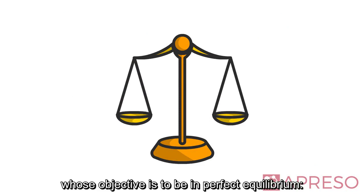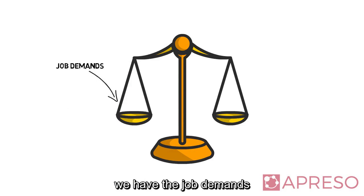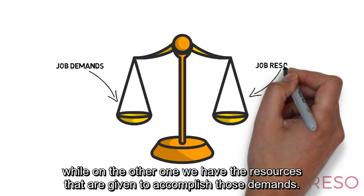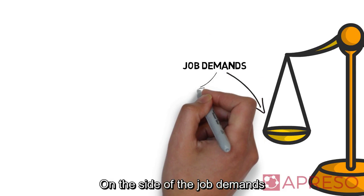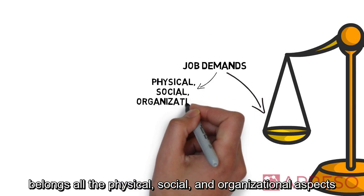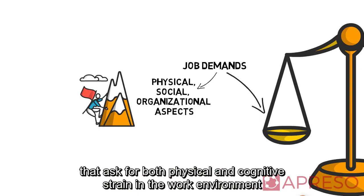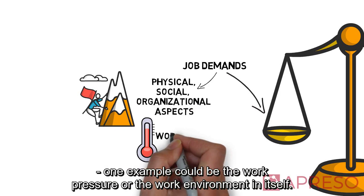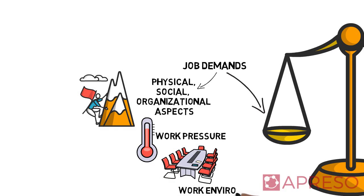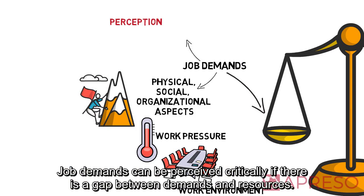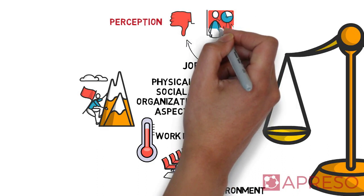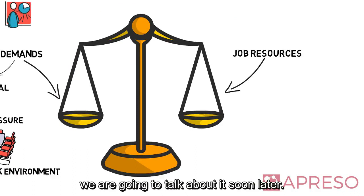Let's imagine the JDR model as a balance, whose objective is to be in perfect equilibrium. On one side we have the job demands, while on the other we have the resources given to accomplish those demands. Job demands include all the physical, social and organizational aspects that ask for both physical and cognitive strain in the work environment — for example, work pressure or the work environment itself. Job demands can be perceived critically if there is a gap between demands and resources. Keep this aspect of perception in mind, as we are going to talk about it shortly.